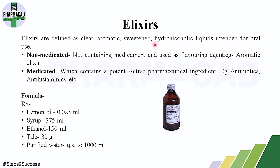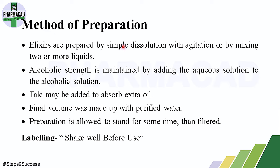Elixirs are of two types: non-medicated (flavored aromatic elixirs using only flavoring agents) and medicated (where active pharmaceutical ingredients such as antibiotics or antihistamines are dissolved). An example formula includes: lemon oil 0.05 ml, syrup 375 ml, ethanol 150 ml, and purified water sufficient to make up 1000 ml. Elixirs are prepared by simple dissolution with agitation, or by mixing two or more liquids.